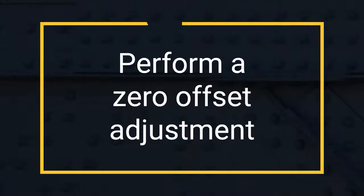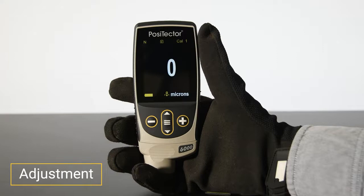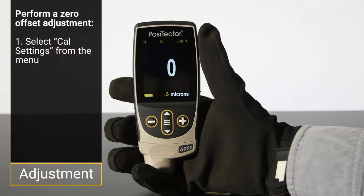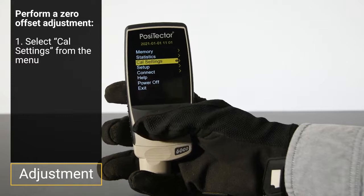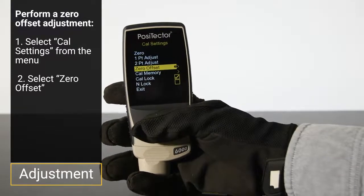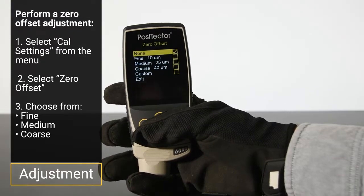If access to the uncoated substrate is not possible, or if measuring in accordance with ISO 19840, correction values can be used to make a zero offset adjustment. Select Cal settings, then zero offset, and select from either fine, medium, or coarse.